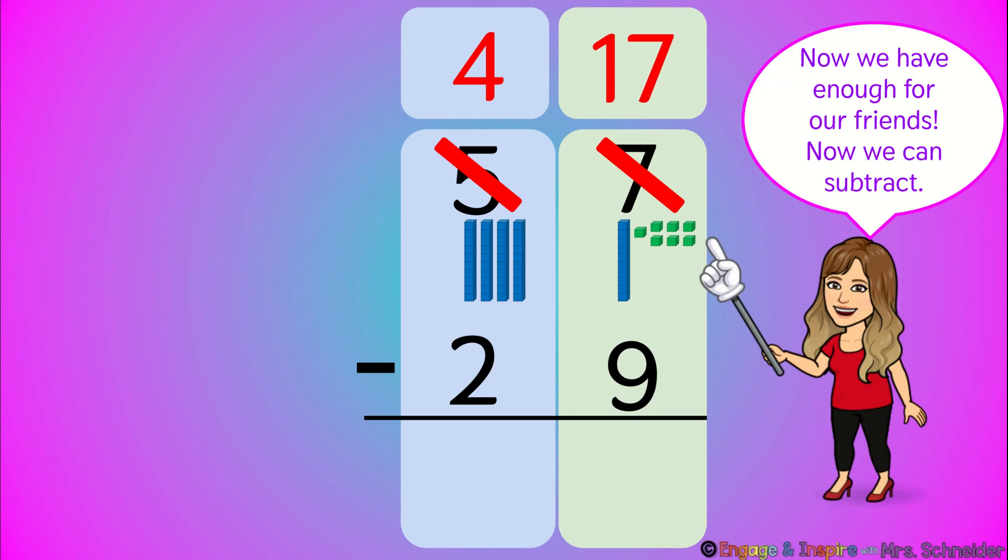Now we can subtract. We always subtract the ones first. 17 minus nine. Hmm, that's a big number. You can count backwards.